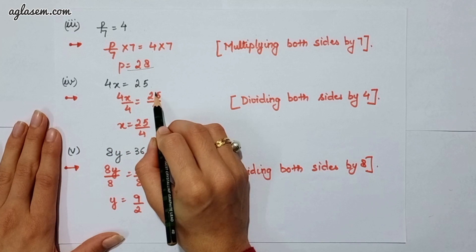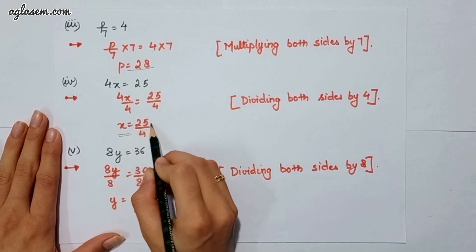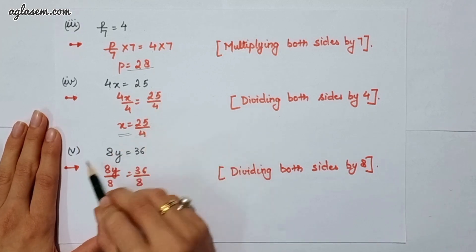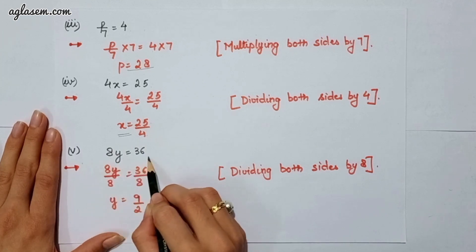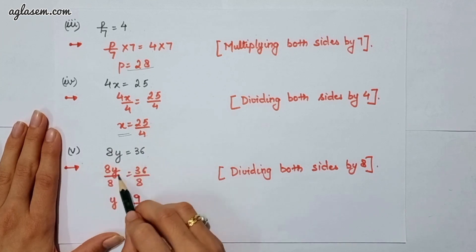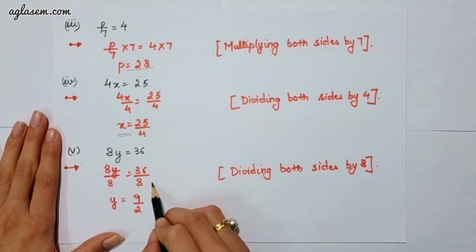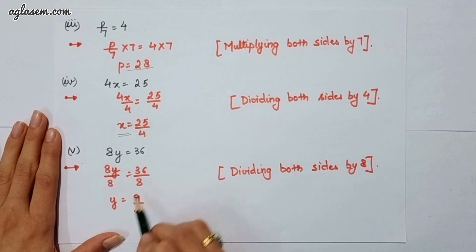Moving to the fifth part, which says 8y is equal to 36. So 8y divided by 8 equals 36 divided by 8. We have divided both sides by 8, therefore y will be 9 upon 2.